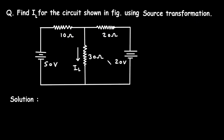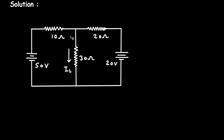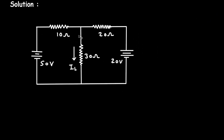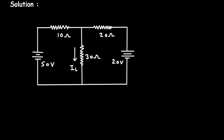For this circuit we have to find the value of the load current I L by using source transformation technique. We can convert this voltage source and this voltage source into their equivalent current sources.